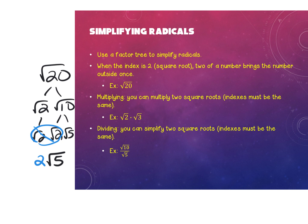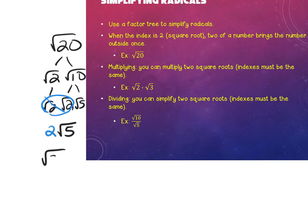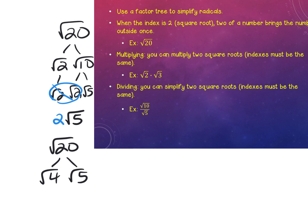Some of you who are good at noticing factors that are perfect squares — for example, if you had done 4 times 5 to begin with instead of 2 times 10, and if you recognize 4 was a perfect square, you could just square root it and go right to the answer. We will do this so often that it will become automatic for you.